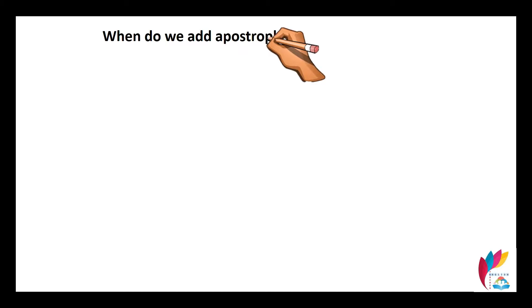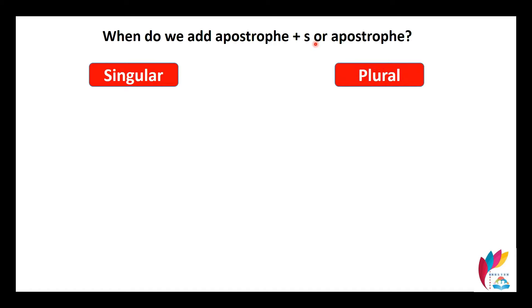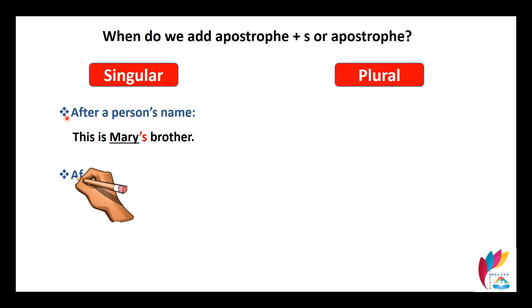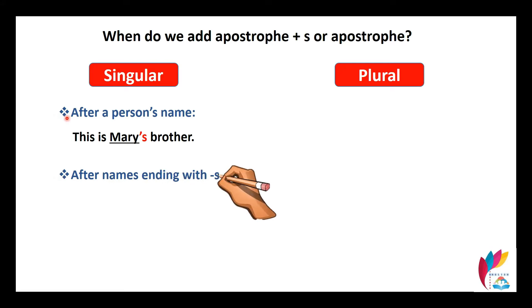Now let's see when we add the apostrophe S or only the apostrophe. We will look at singular nouns and plural nouns. We have two cases. The first is after a person's name, for example Mary's brother. The second is after names ending with S, like James.